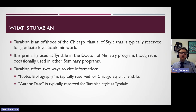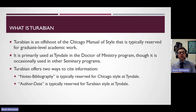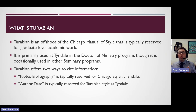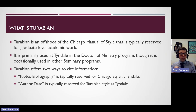So what is Turabian? Turabian is an offshoot of the Chicago Manual of Style. Chicago is one of the major citation styles used at Tyndale, and Turabian is considered an offshoot of it, typically reserved for graduate-level academic work. One of the main programs that uses Turabian style is the Doctor of Ministry program here at Tyndale, for things related to biblical studies, preaching, or leadership. Turabian actually offers two ways to cite information: the notes-bibliography version and the author-date style — and the author-date style is what we're going to look at in more detail today.